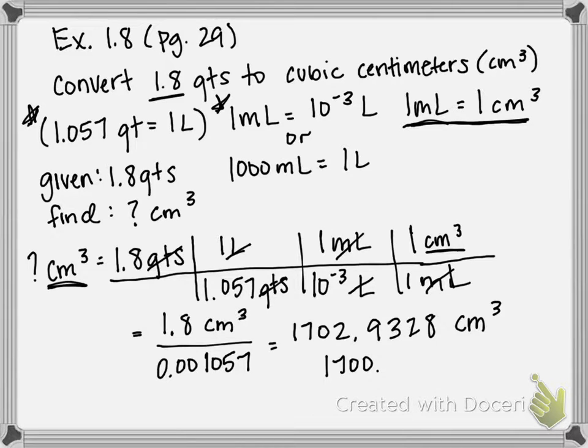So we take the decimal, move it up two spots, we get 1.7, and we're going to leave off the 02 because it's not significant.